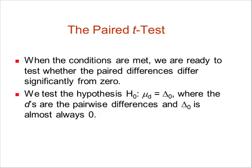So when the conditions are met, we are ready to test whether the paired differences differ significantly from zero. We test the hypothesis μ sub d, which is the mean difference, is equal to δ null, which is what is that difference, where most of the time that's the change. What is the change? Most of the time that change is zero.